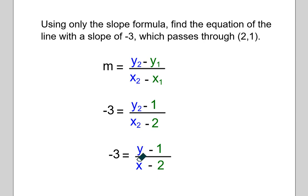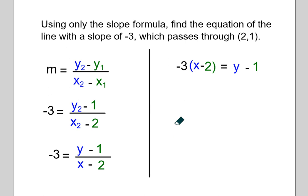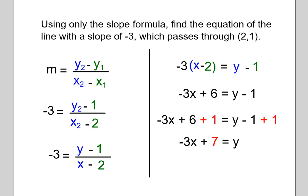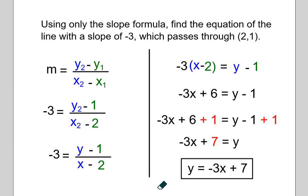Now I'm going to get rid of the subscripts on X and Y, because when you have a linear equation, you always leave X and Y general. We don't want to represent specific values — we want to say that every X value and every Y value will be related to each other in this way. Now I'm going to multiply both sides by the quantity in the denominator. That simplifies to this version of the equation.